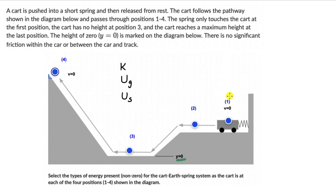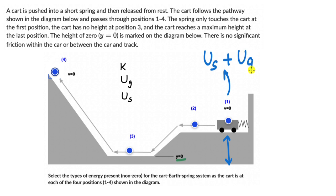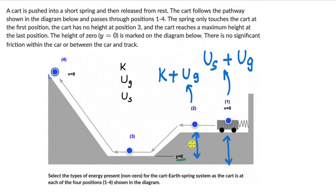At position 1, we have the compressed spring, so there is some elastic potential energy. The cart is also at a certain height above the y equals zero level, so there is some gravitational potential energy as well. At position 2, the spring is not compressed, so there is no elastic potential energy — that elastic potential energy has changed to kinetic energy because now the cart is moving with some velocity. There is still some gravitational potential energy because the cart is still at a certain height above y equals zero.